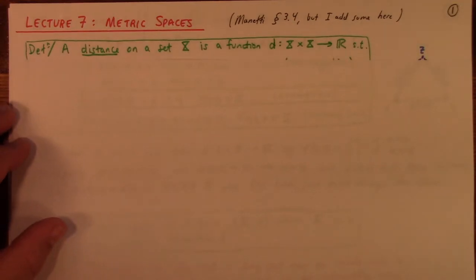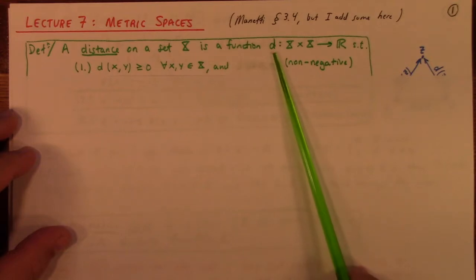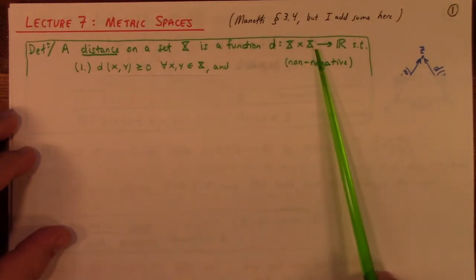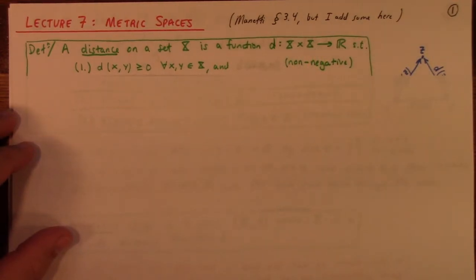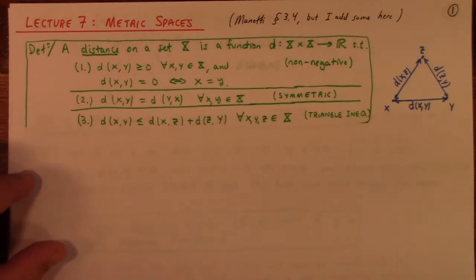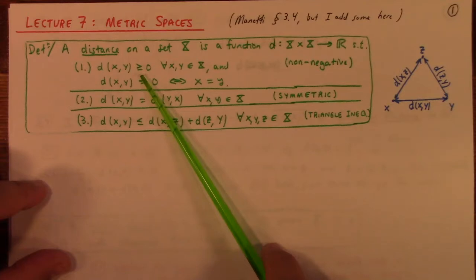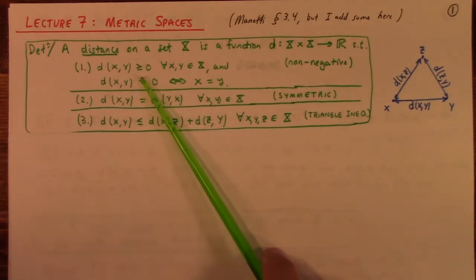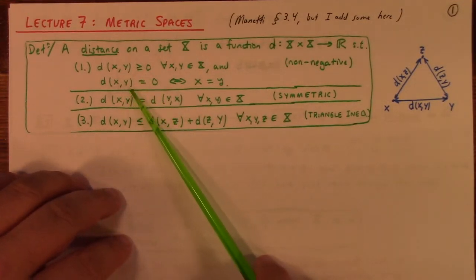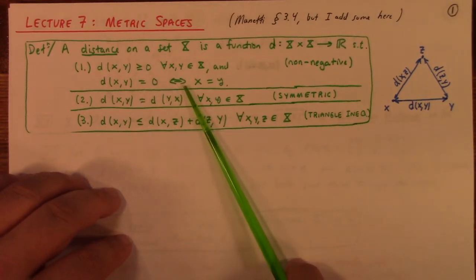So first of all, definition: a distance on a set X is a function which takes in a pair of points in X and outputs a real number. We call it the distance function, provided it satisfies these three axioms. The distance has to be non-negative, and the distance between two points is only zero if those are in fact the same point.